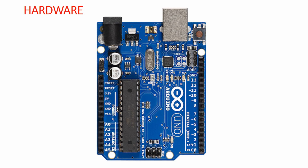Starting with our development board, we are going to use the Arduino Uno development board throughout this course. This seems to be a very tiny board, but it has a powerful Atmega 328 microcontroller, so you can build any sophisticated embedded application with this Arduino Uno. Let us discuss the various components available in this Arduino Uno.